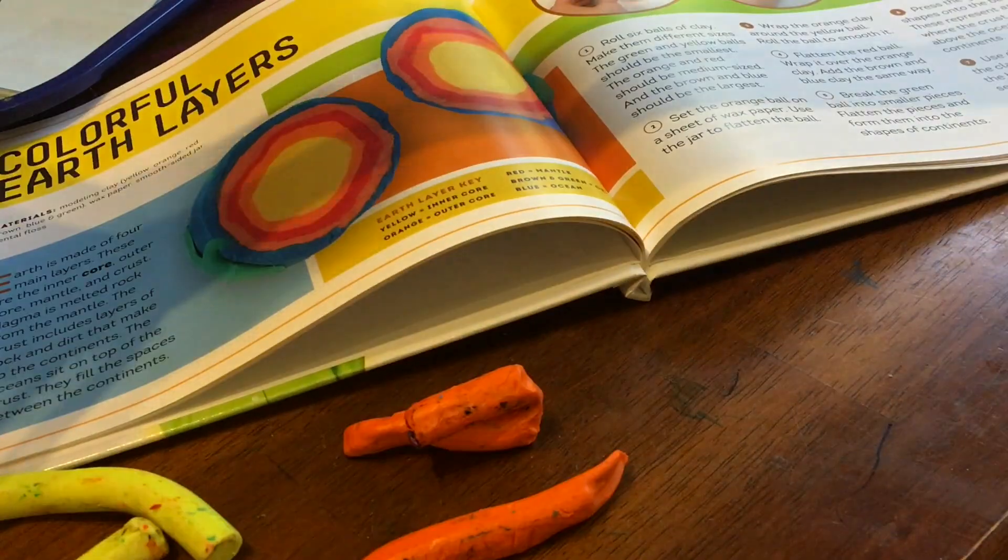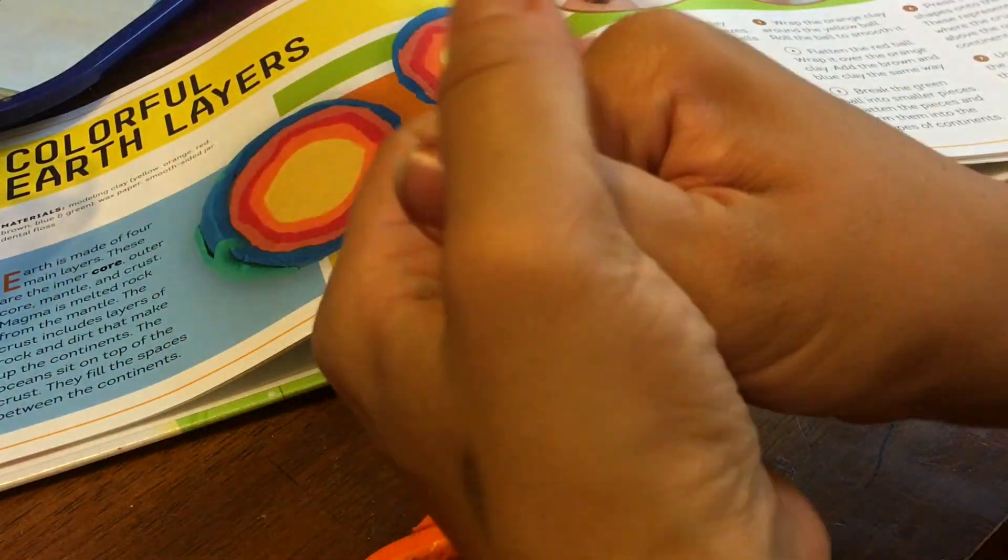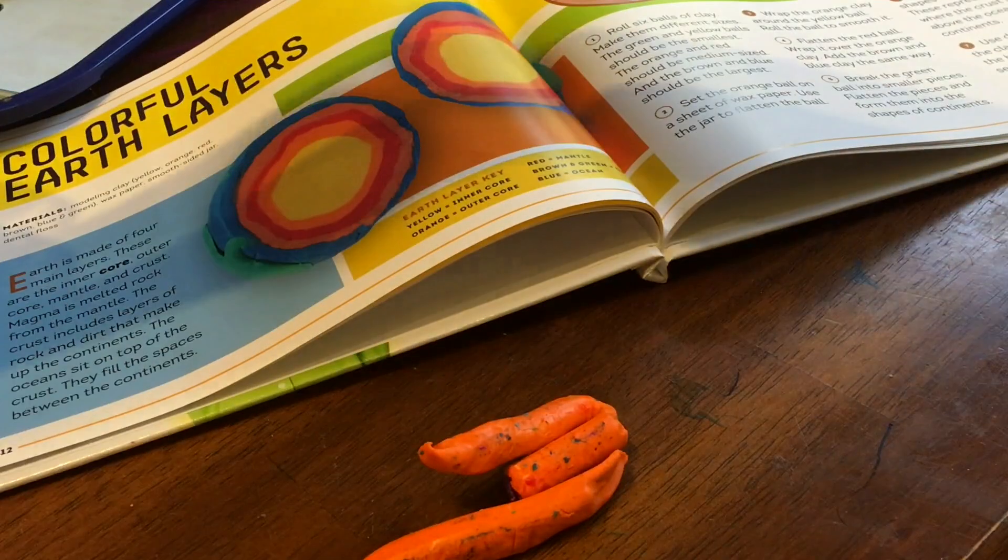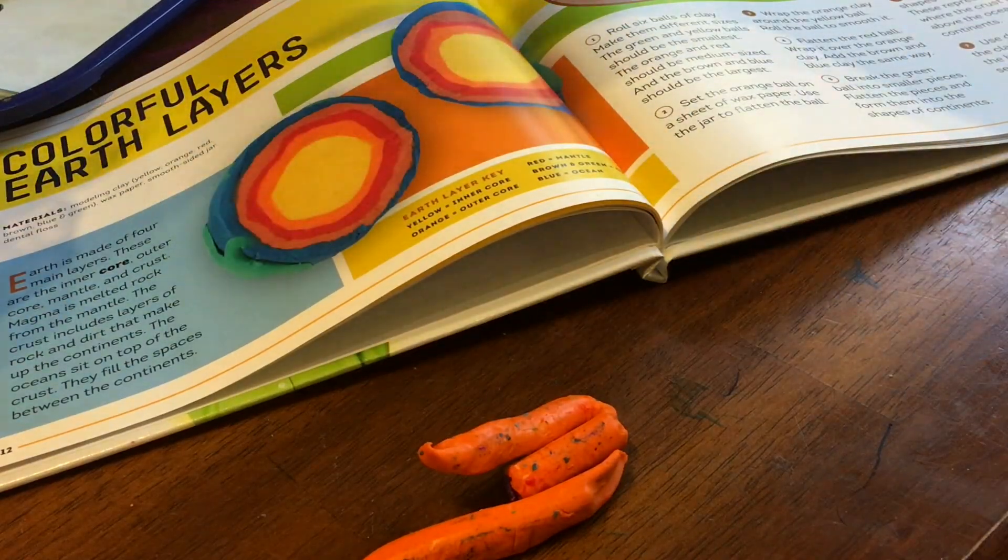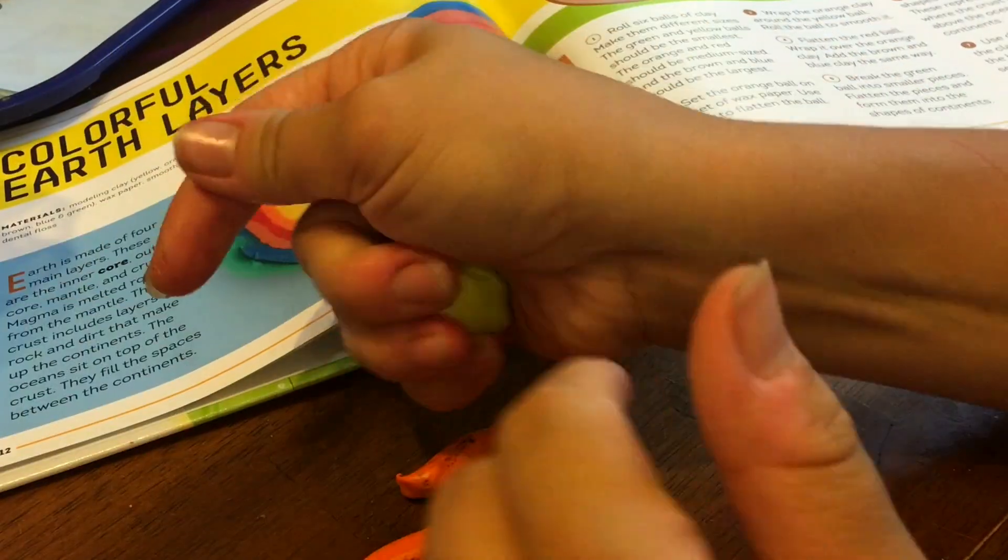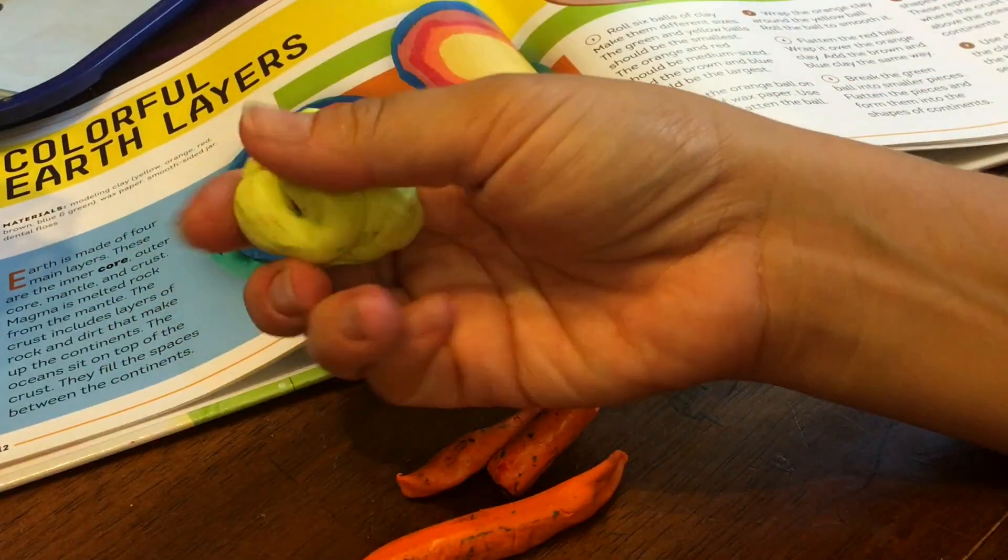We're learning about prehistory and the origins of earth, so this fits in really nicely. I've been using my daughter's scrap clay bin. We use an awesome clay from Michaels, and it's eight dollars for about a hundred and twenty colors. It's from Craft Smart.